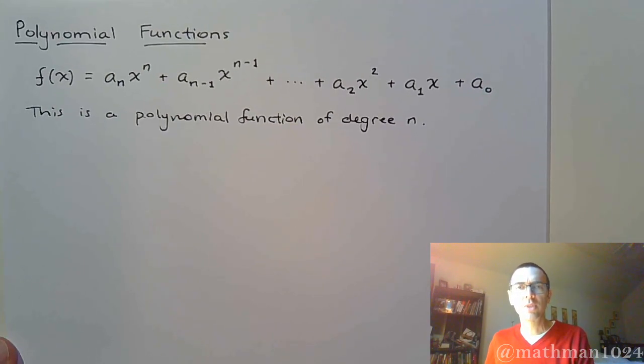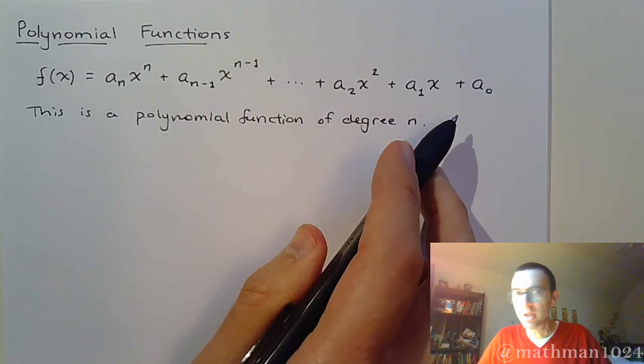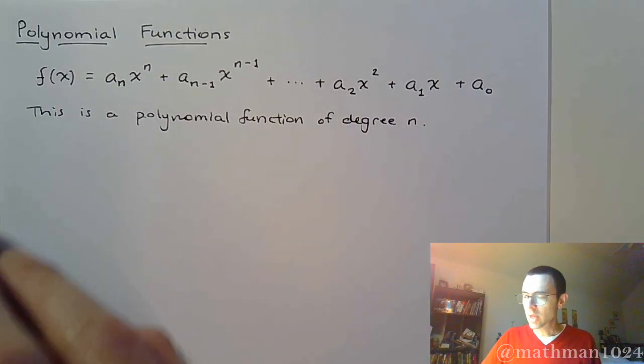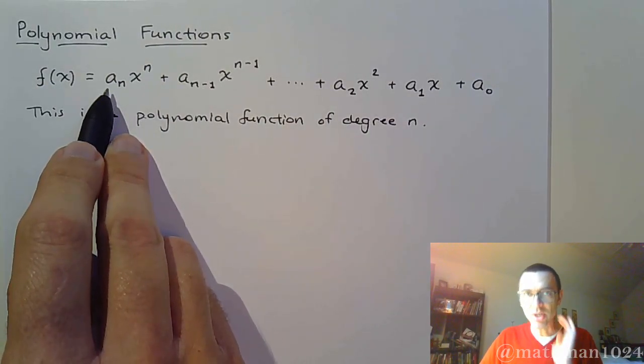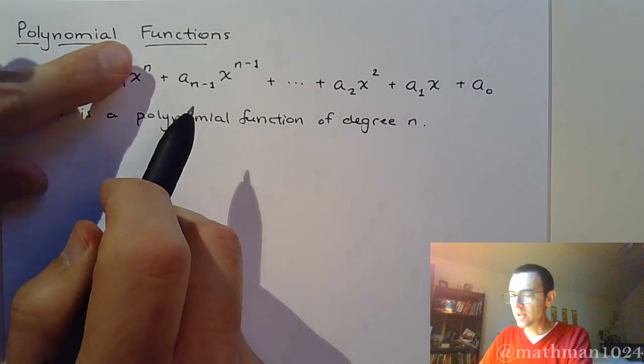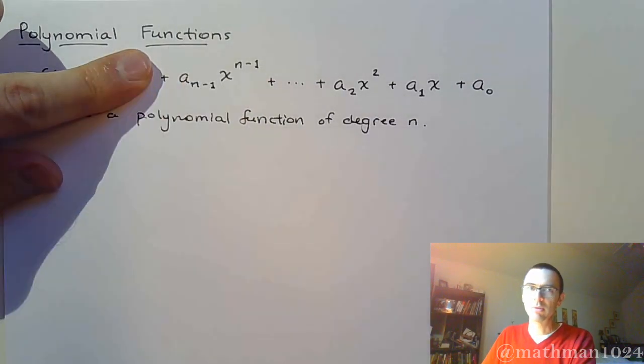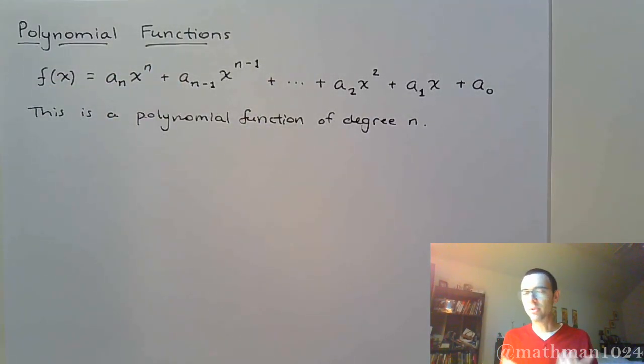The assumptions that we're making here, what we have to have for this to be a true polynomial function, is that all these coefficients are going to be real numbers. This lead coefficient is not going to be zero, otherwise this guy would then be the lead coefficient. So that's why we talk about it being a polynomial function of degree n.